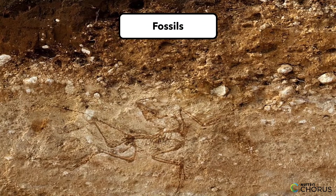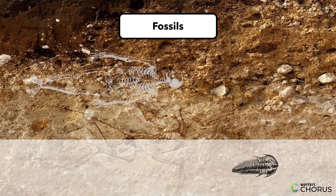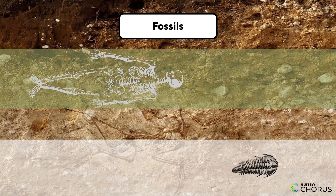Another tool is to study fossils. Fossils are like clues that help us figure out what the Earth was like in the past. For example, if we find a fossil of a trilobite — an extinct marine arthropod — in a rock layer, we know that layer is very old. And if we find a fossil of a human in a rock layer, we know that layer is much younger.